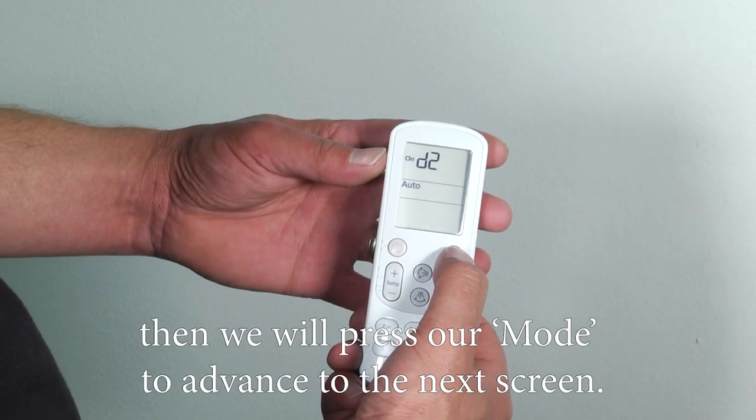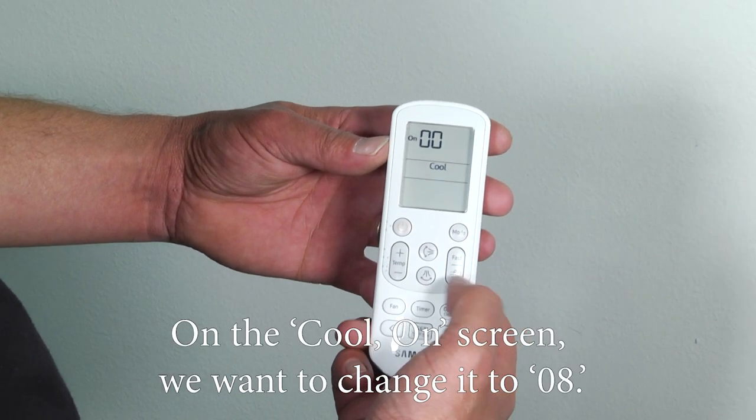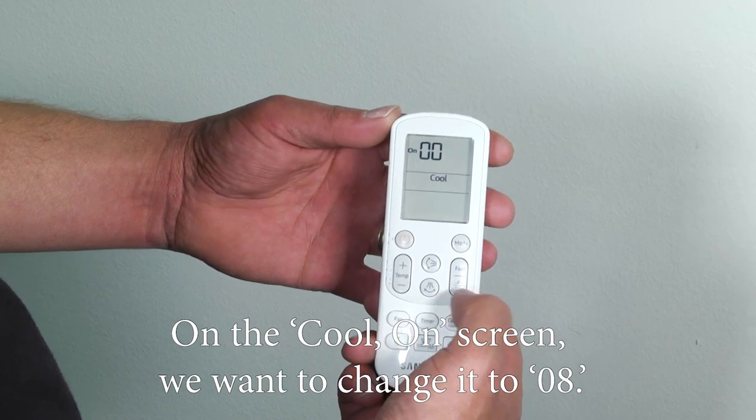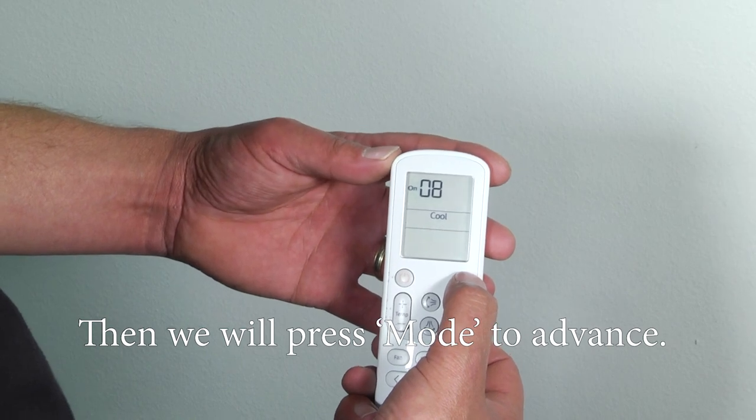Then we'll press our mode to advance to the next screen. On the cool on screen, we want to change it to zero eight. Then we'll press mode to advance.